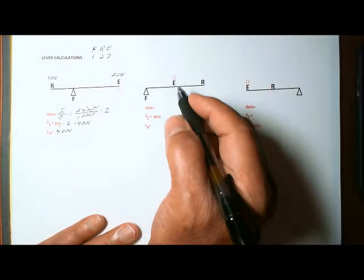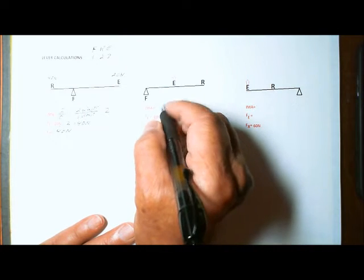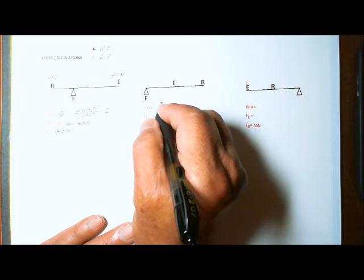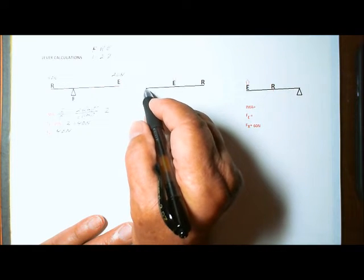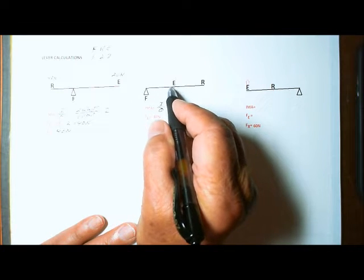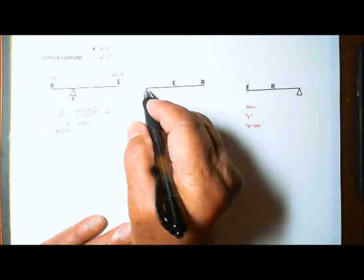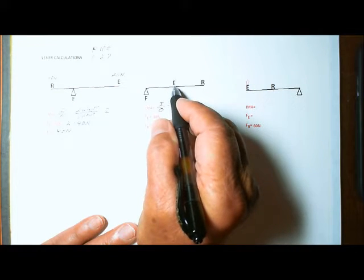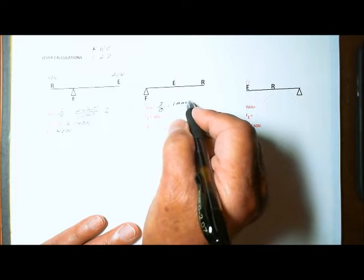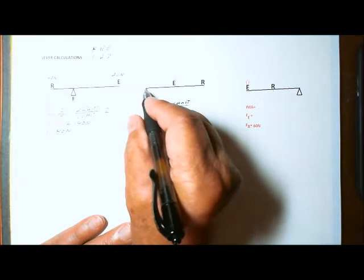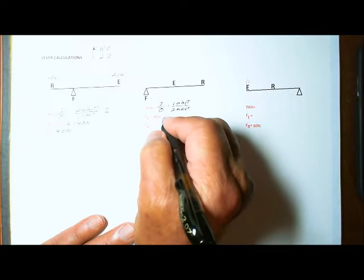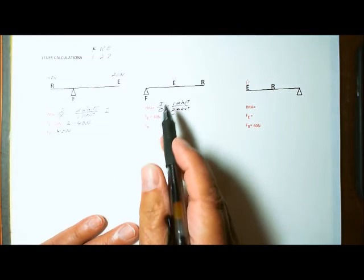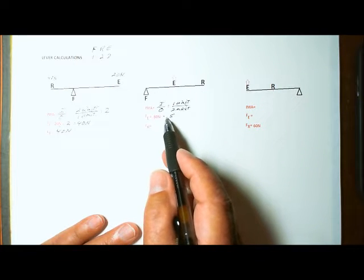Now let's calculate the ideal mechanical advantage for the third class lever. The IMA is always the input side divided by the output side. Measuring from the fulcrum to the effort force is one unit, while the resistance arm from the fulcrum to the resistance force is two units — twice as long. So the input side is one unit and the output side is two units, giving us one divided by two, which is 0.5.